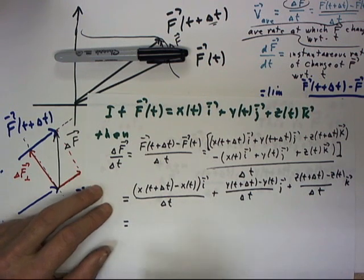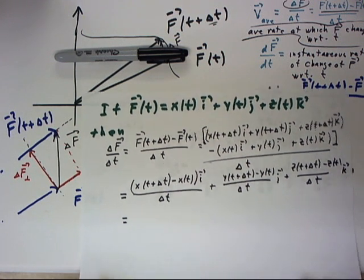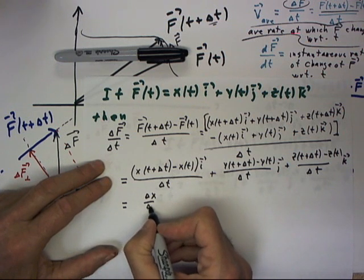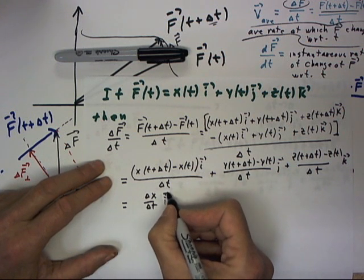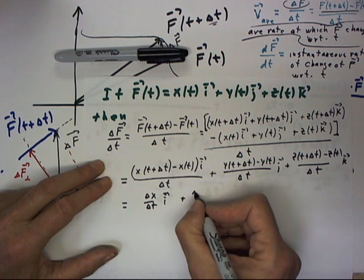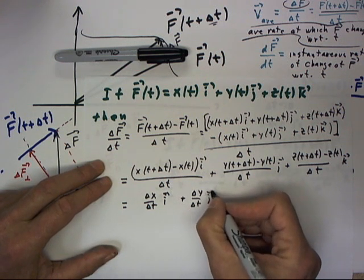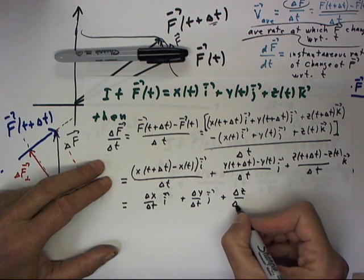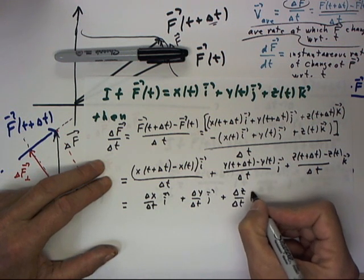We could write this, if we wished, as delta x over delta t times i plus delta y over delta t times j plus delta z over delta t times k.